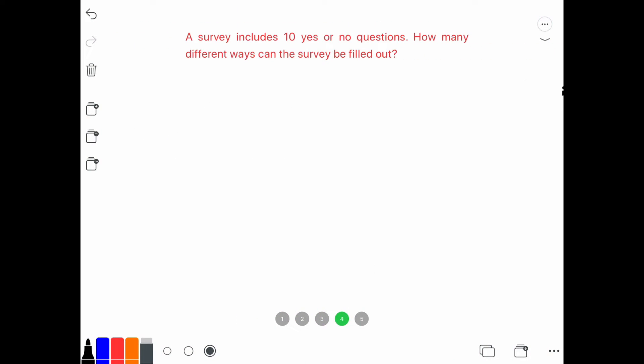If we go to the ten yes or no questions, we have question one, two, and three until we go to question ten. Since there are two total cases per question, we multiply two ten times because there are ten questions. And if we multiply all of them, we get one thousand twenty-four.